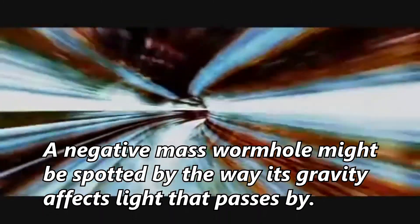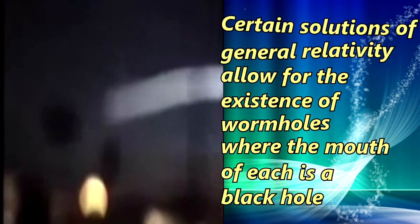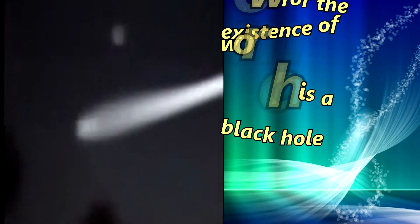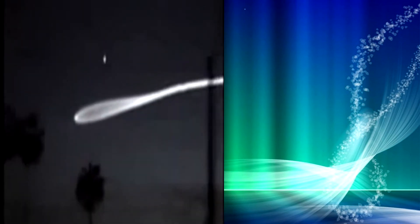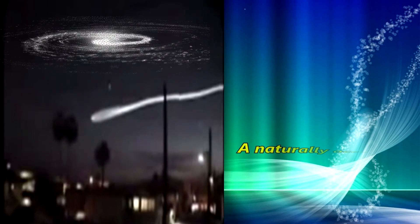Certain solutions of general relativity allow for the existence of wormholes where the mouth of each is a black hole. However, a naturally occurring black hole, formed by the collapse of a dying star, does not by itself create a wormhole.